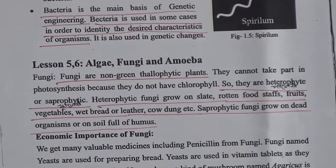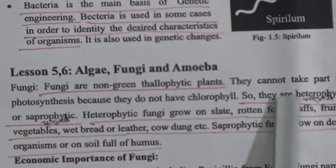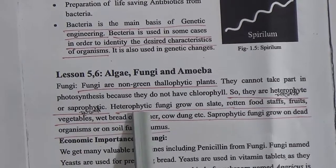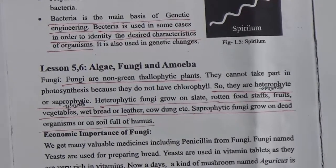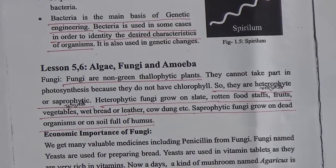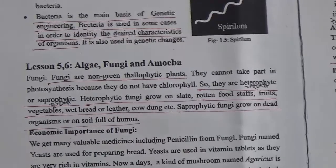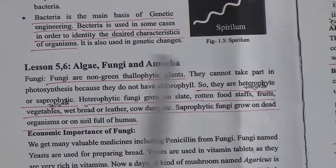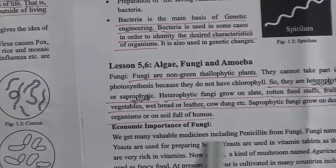Lesson five and six: algae, fungi, and amoeba. Fungi are non-green thallophytic plants; having no chlorophyll, they cannot produce their own food and depend on other plants or organic material. They cannot take part in photosynthesis. So they are heterophytic or saprophytic. Heterophytic fungi grow on rotten food, stumps, fruits, vegetables, wet bread, leather, or cow dung. Saprophytic fungi grow on dead organisms or soil full of humus.